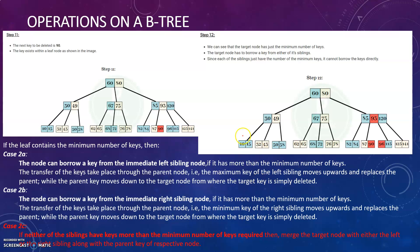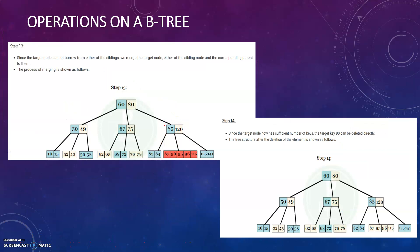The next key to be deleted is 90. This particular node again doesn't satisfy the minimum criteria. If you want to borrow from the left or right sibling, both nodes don't satisfy the minimum criteria either. So you create a new node and merge the nodes together — merging 87, 90, 96, and 115 by pulling 93 down. A new node is created with all nodes brought together, so you can delete 90. The parent node becomes 85 and 120, and this node becomes 87, 93, 96, and 115.